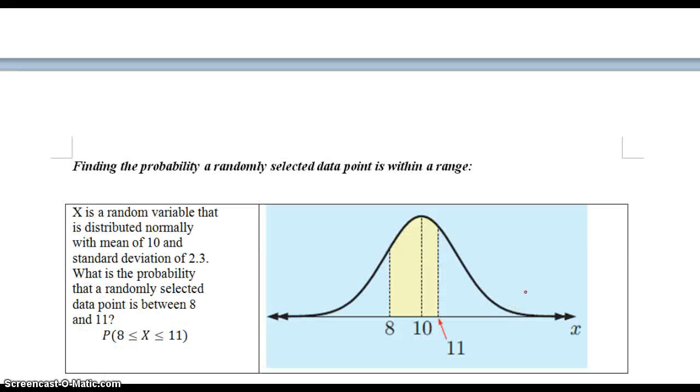Now we're going to learn how to use our calculators. I'm going to be using the Casio calculator. Finding the probability that a randomly selected data point is within a range is what we're looking for. X is a random variable that's distributed normally with a mean of 10, standard deviation of 2.3. What's the probability that a randomly selected data point is between 8 and 11? I already drew a graph just so you could see it a little easier.